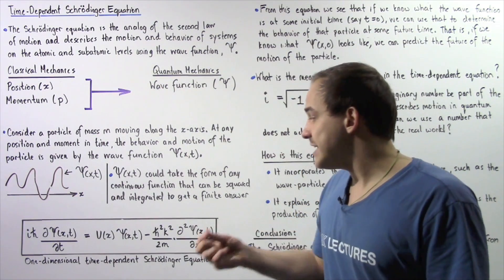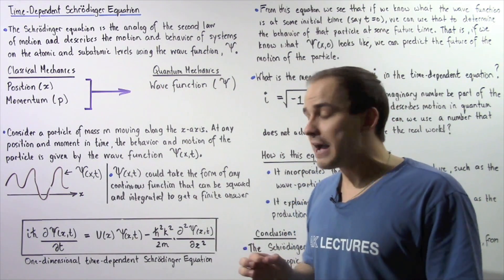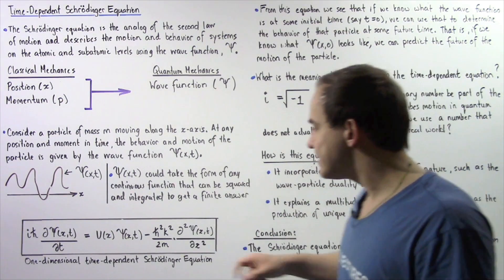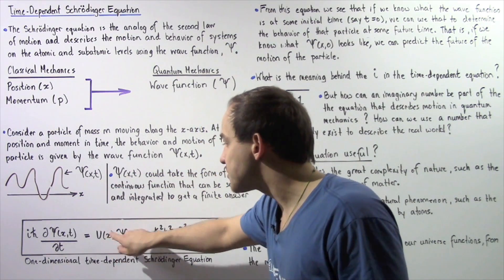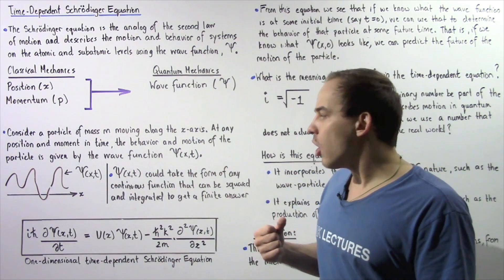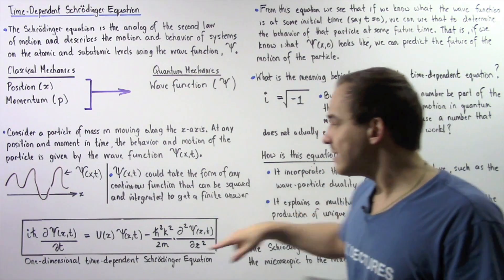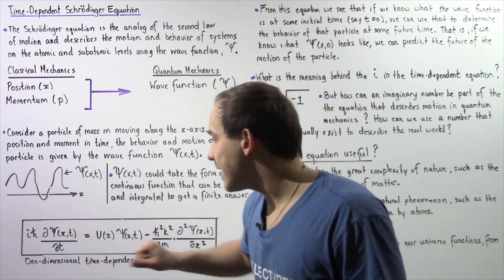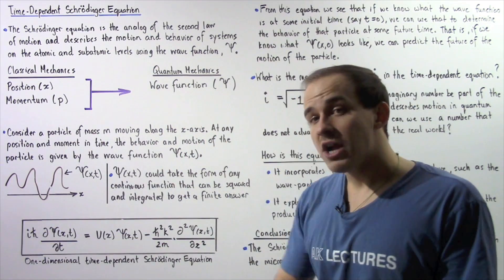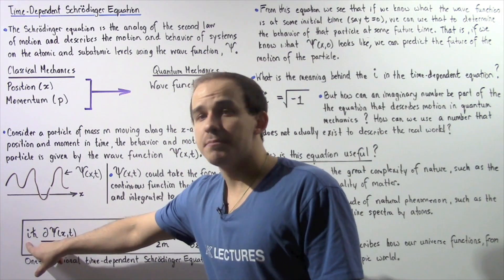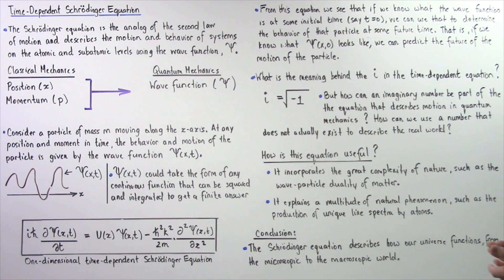So this h-bar is equal to 1.055 times 10 to the negative 34 joules multiplied by seconds. Now, this U(x) is basically the potential energy of our particle that is moving along the x-axis, and it depends on the position x. On this side we also have h-bar as well as an important term given by i, which we will talk about in just a moment.